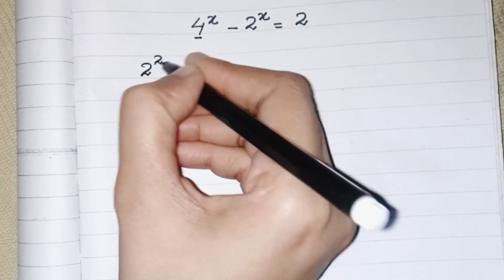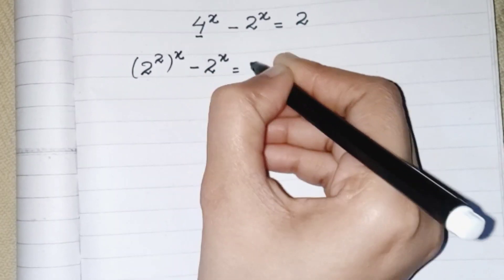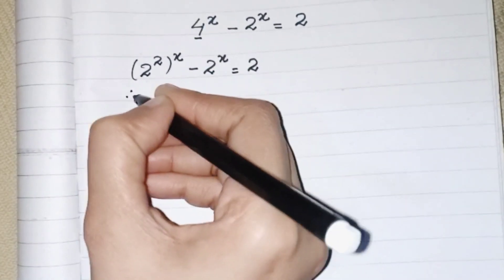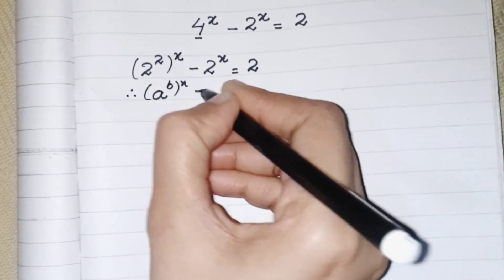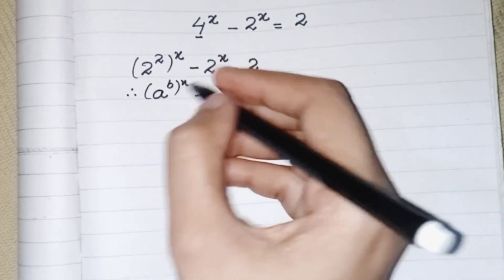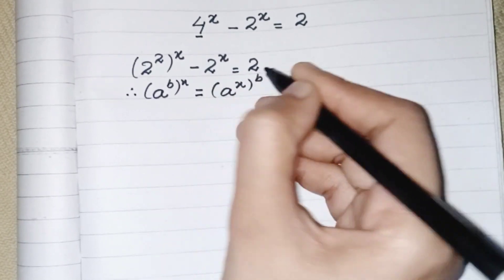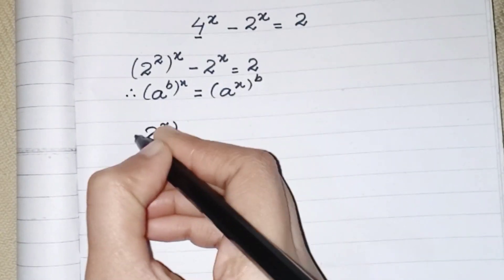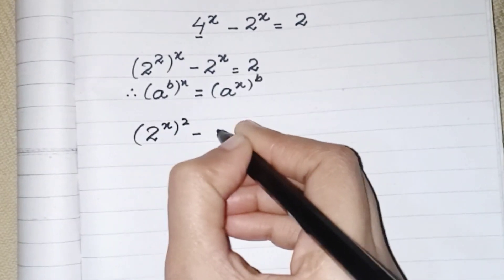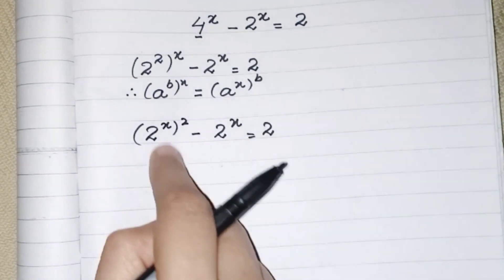So (2^2)^x - 2^x = 2. We learned before that whenever a power over power and powers are multiplying to each other, we can just swap the powers upside down. So we can write this like (2^x)^2 - 2^x = 2. So now we have same basis, same power.